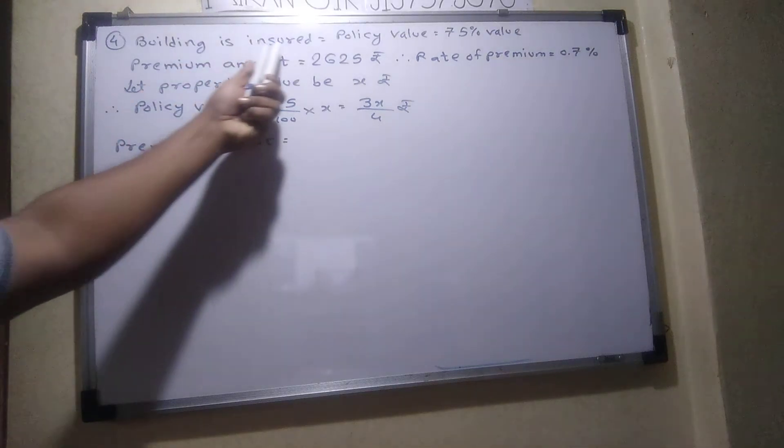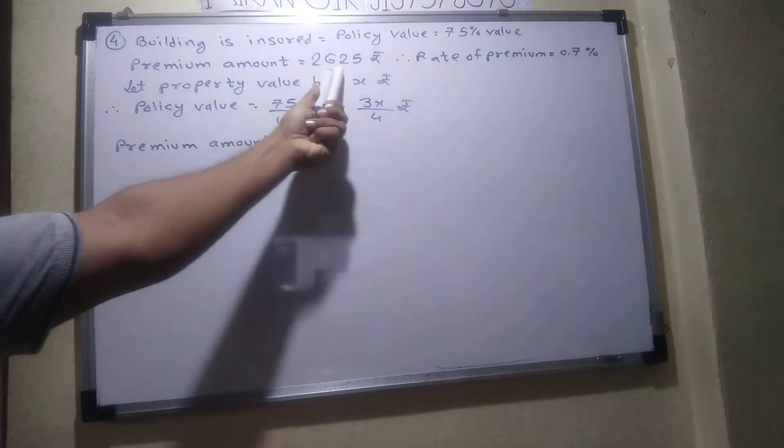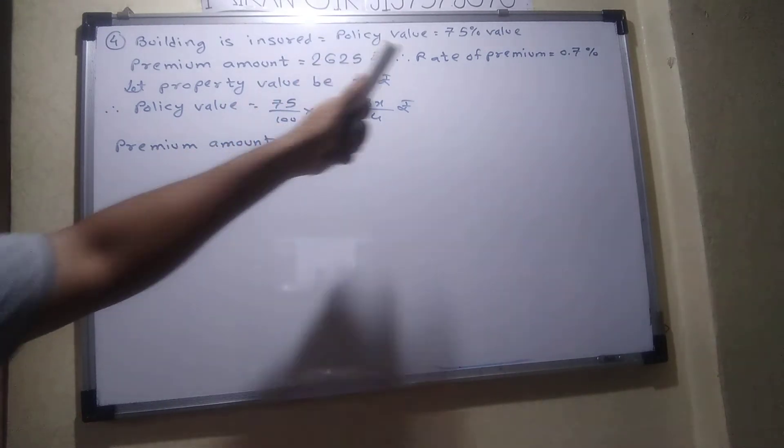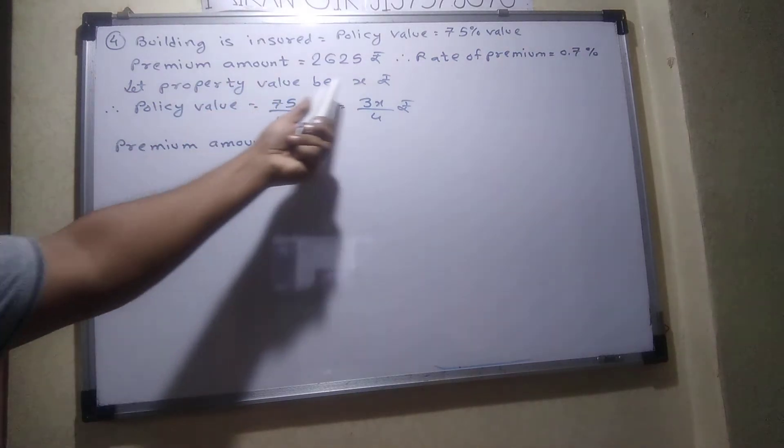So building is insured for how much value? 75% of its value. Premium amount is 2625. Rate of premium is 0.7%. We don't know the property value, so let property value be x rupees.